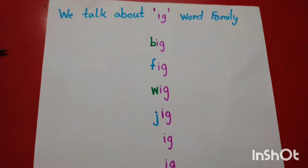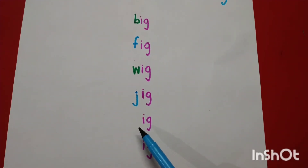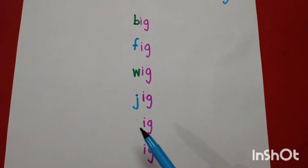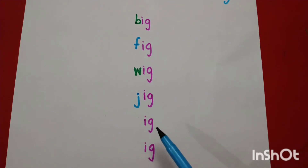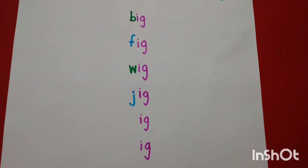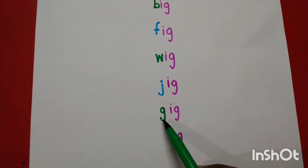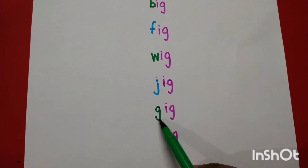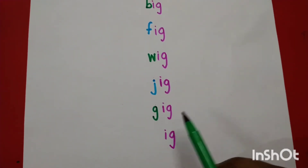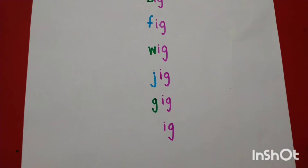Now, right here letter G. Letter G ki friendship Ig se karayenge. Speak the sound of letter G. G, Ig, Gig. Done.